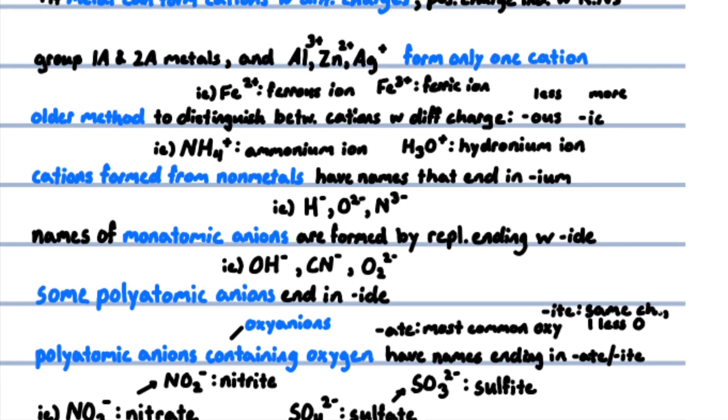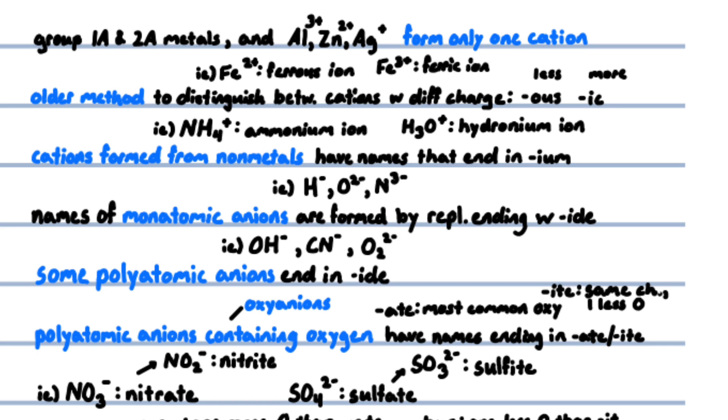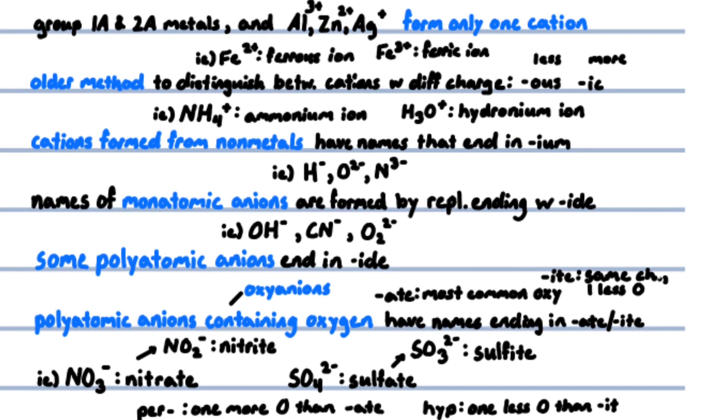NO3 with a negative one charge is nitrate, and NO2 with a negative one charge is nitrite.